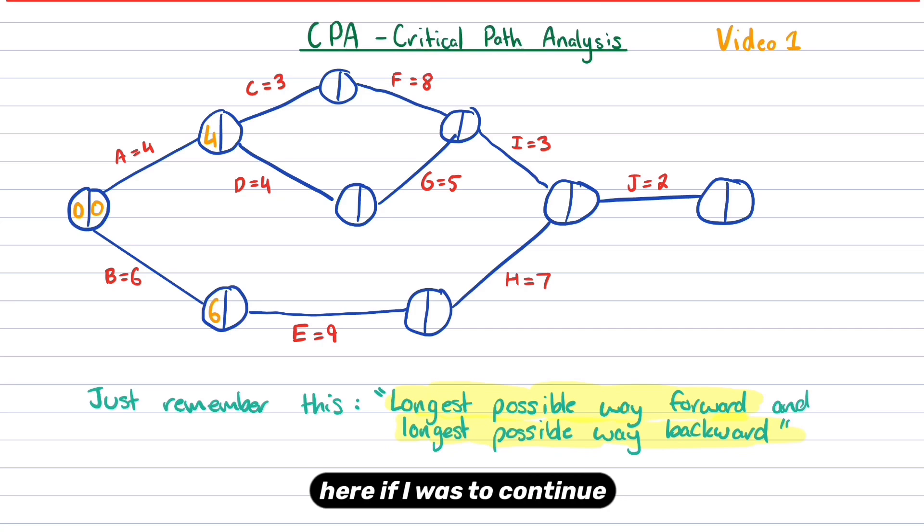And then along the bottom here, if I was to continue, six plus nine is 15. And then after doing activity D, because the only possible way to go to activity D is to go that way, it's going to be eight, right? Four plus four is eight. Then towards the top, once activity C is done, four plus three is seven.